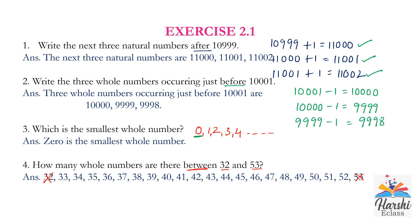Counting the remaining numbers from 33 to 52, we get 20 numbers. So there are 20 whole numbers between 32 and 53. This method is easy for smaller numbers, but if the question asks for numbers between 200 and 350, or between 268 and 424, it becomes difficult.